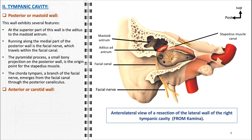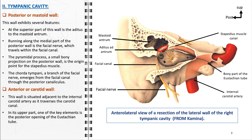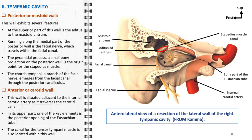The anterior or carotid wall of the tympanic cavity is positioned adjacent to the internal carotid artery as it courses through the carotid canal. In the upper part of this wall is the posterior opening of the eustachian tube. Also located within the anterior wall is the canal for the tensor tympani muscle, which attaches to the malleus and acts to tense the tympanic membrane, helping to modulate sound transmission and protect the inner ear from damage due to loud sounds.